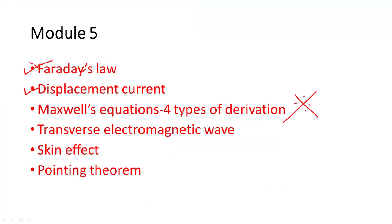— at least one derivation will be asked from Maxwell's equations. There are four derivations of the Maxwell equations: one derived from Ampere's circuit law, then Gauss's theorem. There are four conditions available, and at least one condition will be asked in the examination.